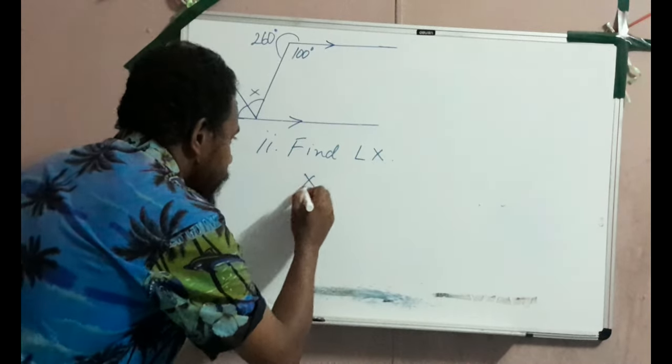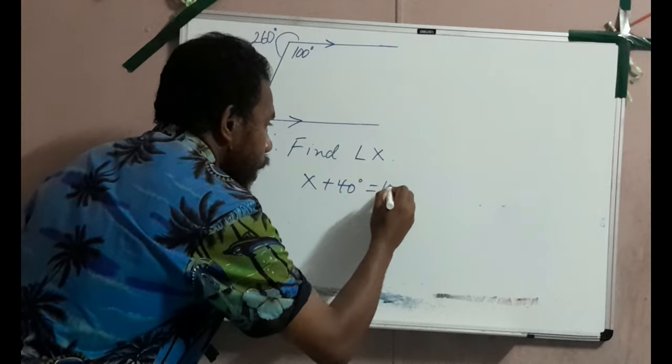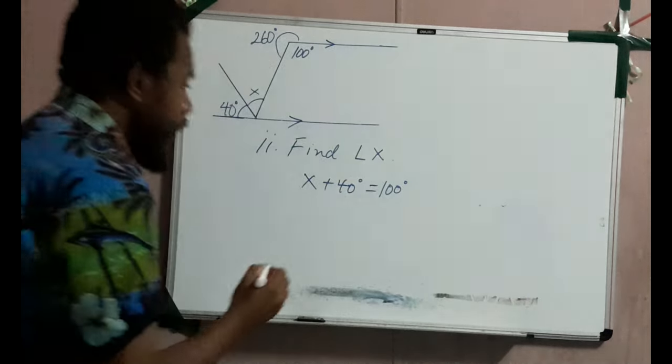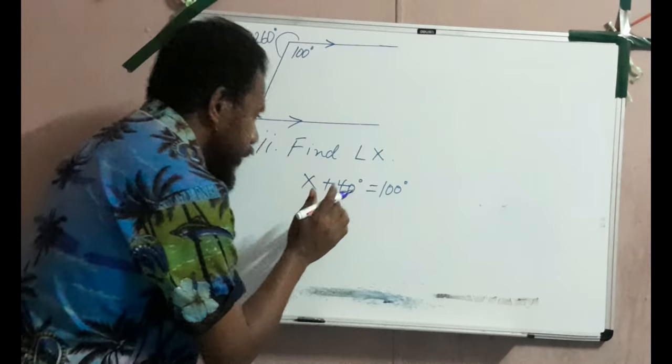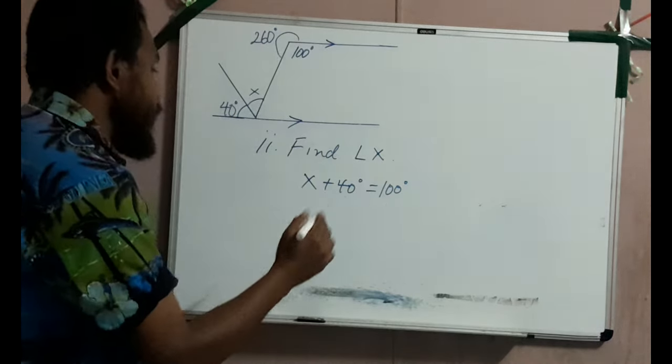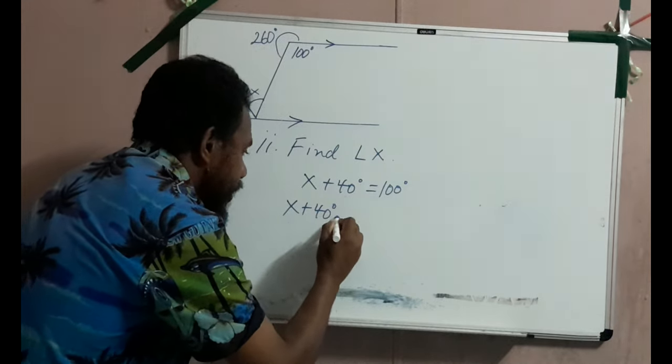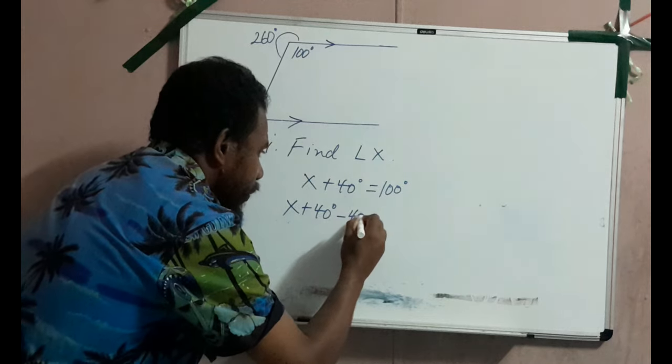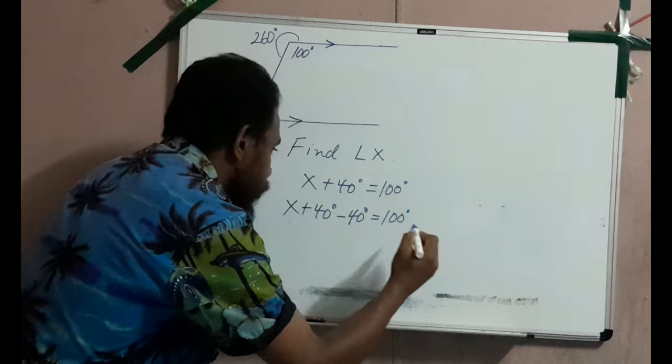Therefore, we can say x plus 40 degrees is equals to 100 degrees. Let's solve for x. To solve for x, get rid of this 40 degrees by subtracting. Therefore, we go x plus 40 degrees take away 40 degrees is equals to 100 degrees, and we'll do the same to our right hand side, take away 40 degrees.